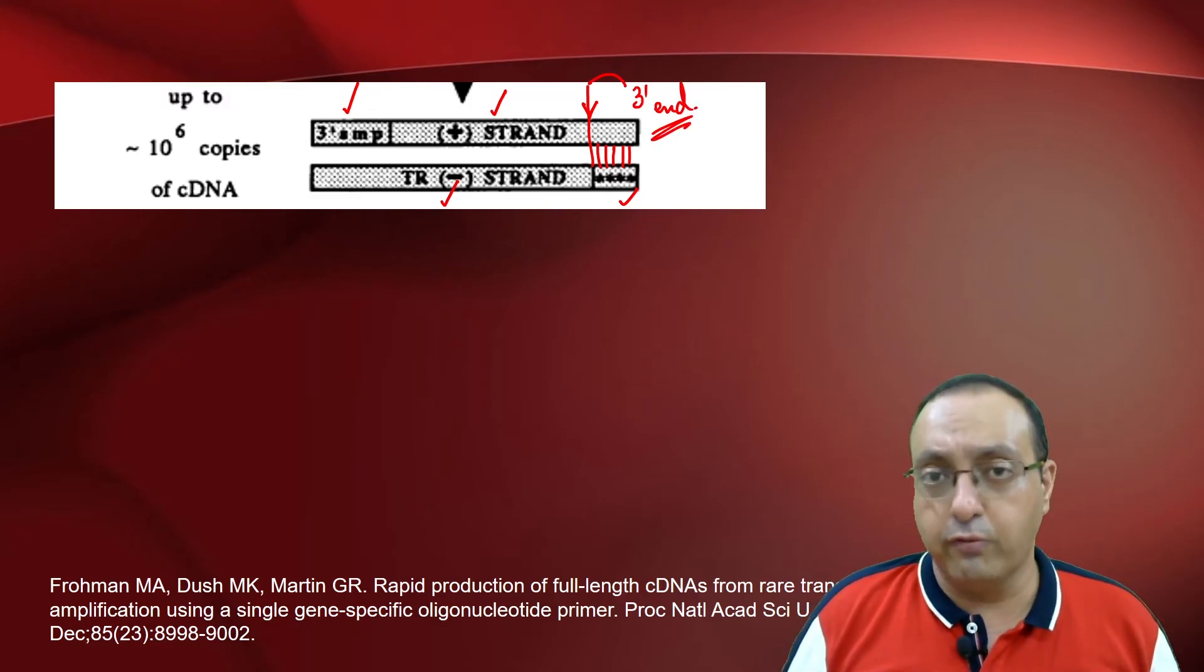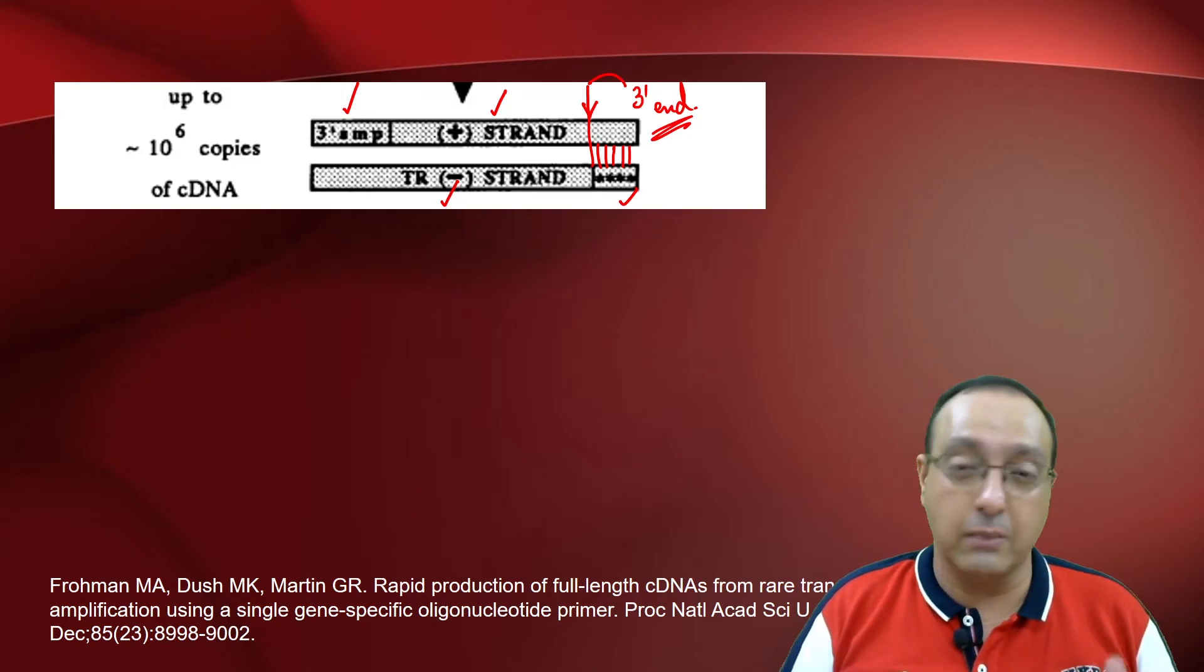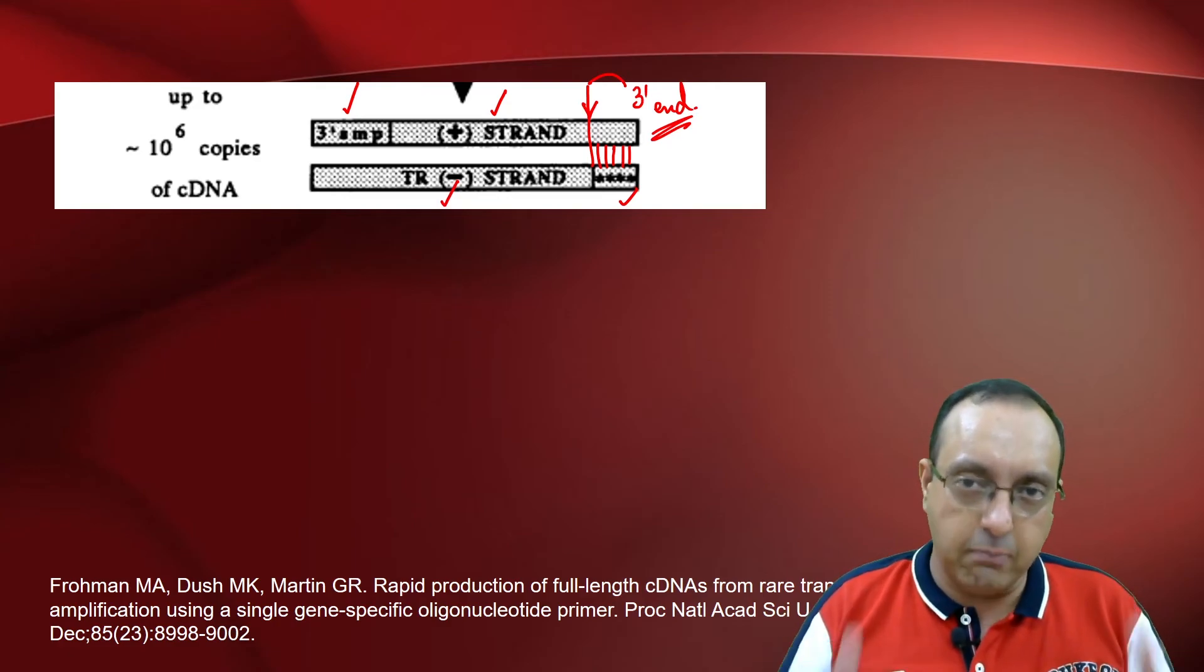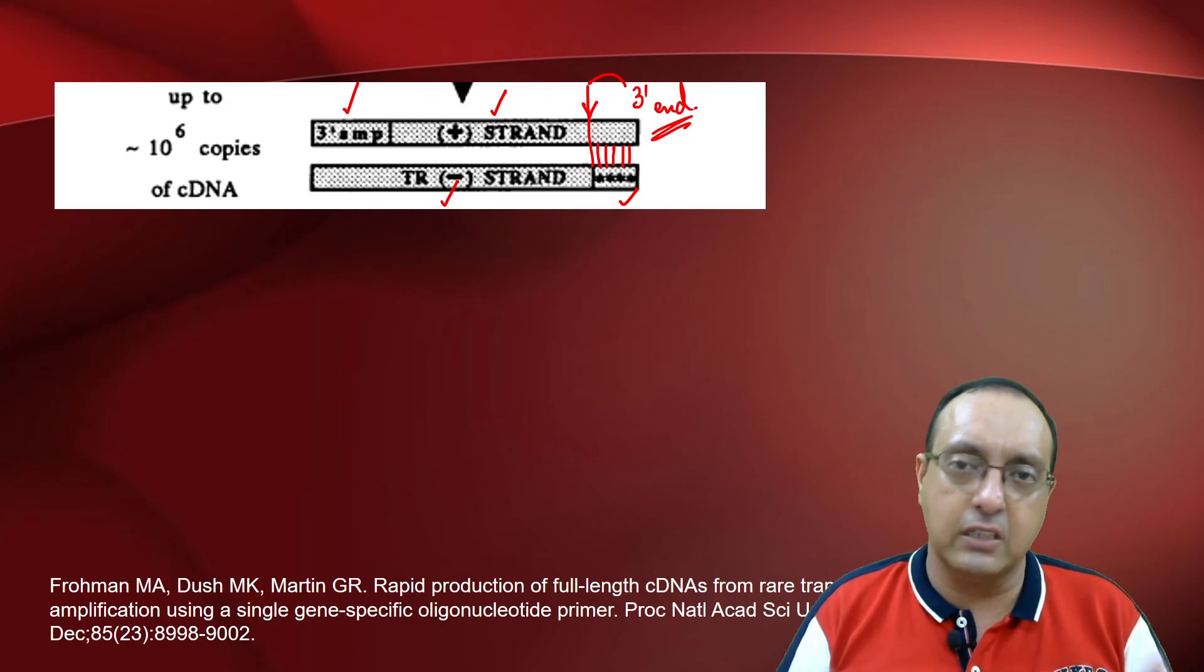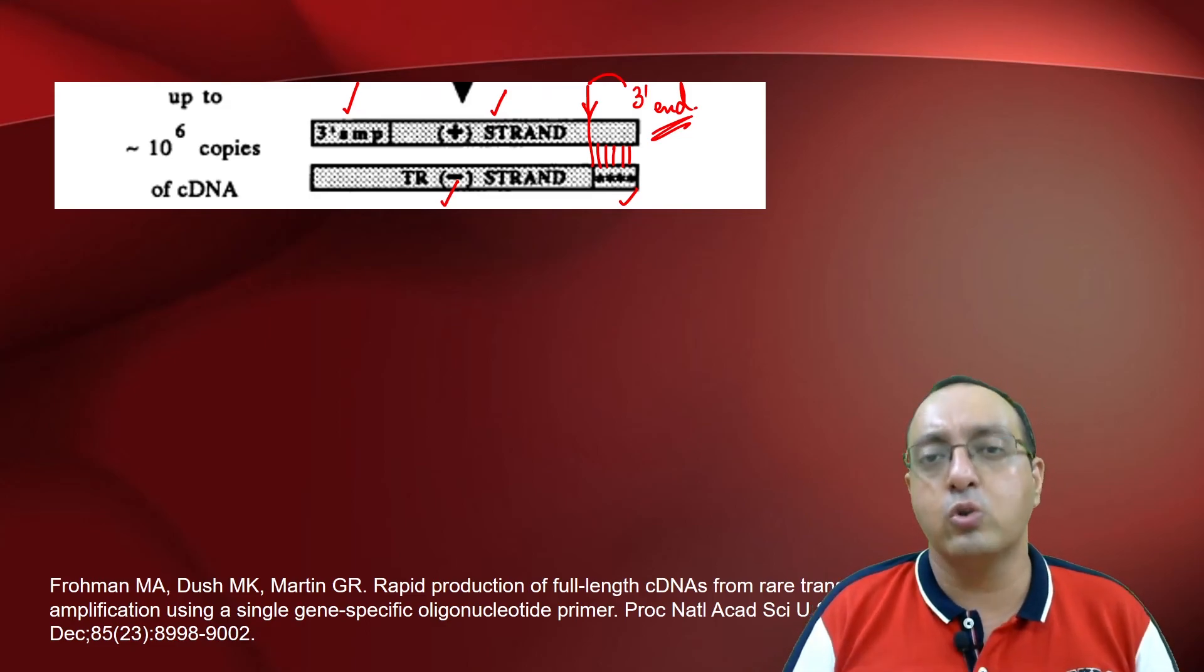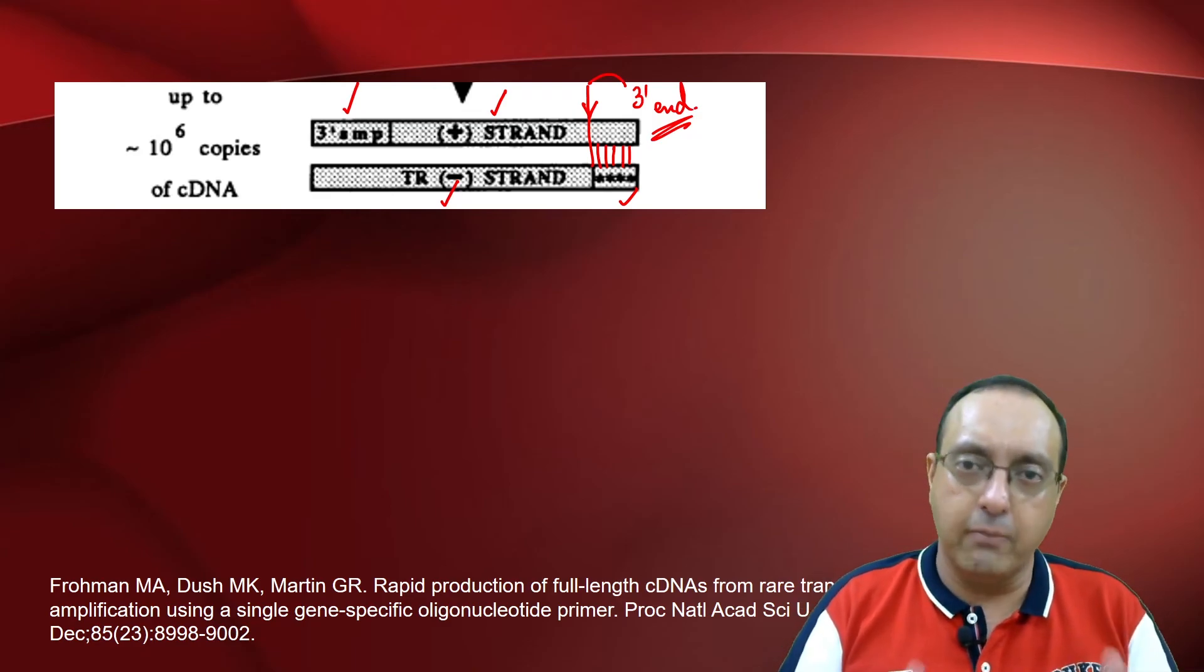So RACE can be very useful for mapping the 5' end as well as 3' end of the RNA, and it is a pretty sensitive and accurate technique as you can see in the PCR amplification steps. Because of these specific primers and the restriction enzymes that you are using, there is almost no chance that you are going to have a mistake in judging the 5' end or the 3' end of the mRNA.